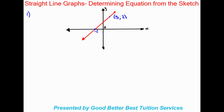Looking at this first example, we can see this line is heading in this direction, so we're working with a positive gradient. We can note that the gradient is positive so we can confirm our equation is right once we're done working it out.